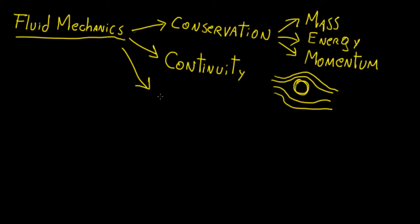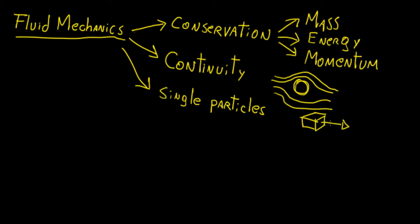Often in fluid mechanics we can analyze things as single particles — I use this term loosely because it doesn't need to be single particles every time. What you will see me doing a lot in this course is taking a little section or extract of a particular fluid that is moving, then drawing vectors: velocity vectors, force vectors, stress vectors. By analyzing that very small, often infinitesimal volume of fluid, we can usually derive very important equations for the motion of the fluid as a whole.